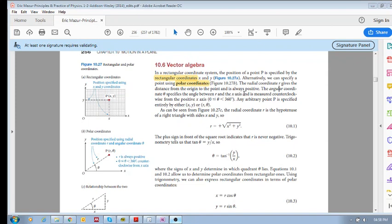As we've seen in Chapter 10, we're dealing with motion in a plane. For the most part, we've needed two components to describe the motion: a component in the x-direction and a component in the y-direction. To describe these vectors, we can use rectangular coordinates x and y.